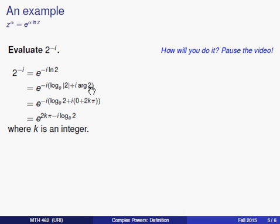Here, 2 is a real number, so its argument is 0 plus any multiple of 2 pi. When we simplify the minus i times this quantity, we're going to combine the minus i with this i, and that will leave a positive 1 times 2 pi, and then the minus i will still be attached to the logarithm base e of 2. Remember that k can be any integer.